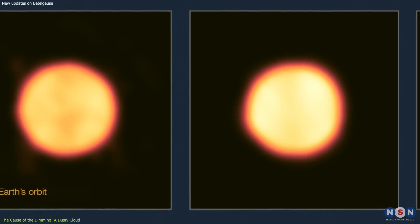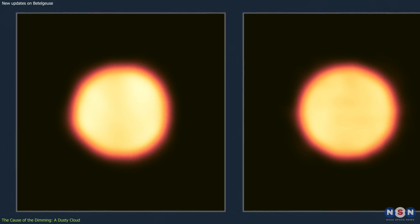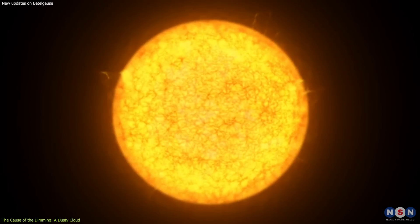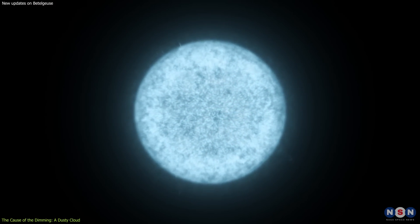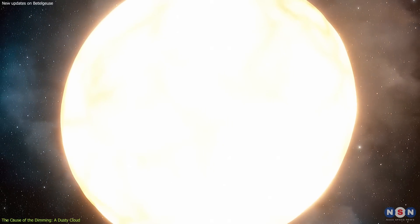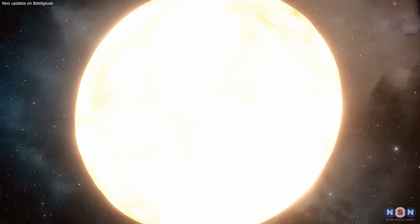The images also show that Betelgeuse's photosphere itself did not change much in size or temperature during the dimming event. This means that Betelgeuse did not shrink or cool down significantly, as some people had suggested. Instead, it was mainly the dust cloud that caused the dimming by scattering and absorbing some of the light from the star.